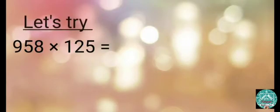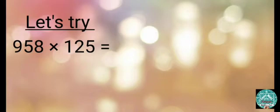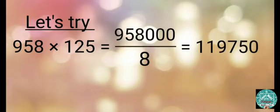Let's try: 958 multiplied by 125, that is 5 raised to the power 3. Put three zeros to the right of 958, then divide it by 8. So the answer is 119,750.